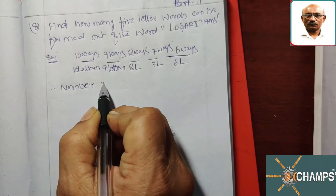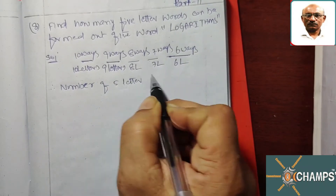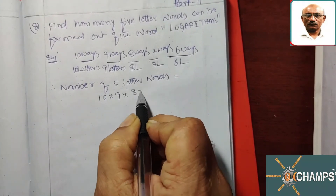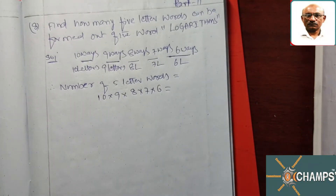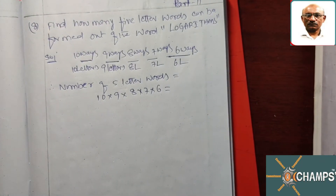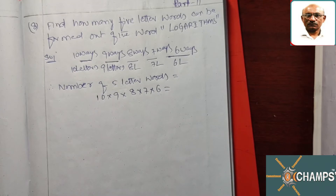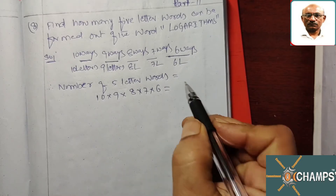Therefore, the number of 5-letter words is equal to 10 × 9 × 8 × 7 × 6. Let me check the calculations: 10 × 9 × 8 × 7 × 6 = 30,240. This many number of words we will get.